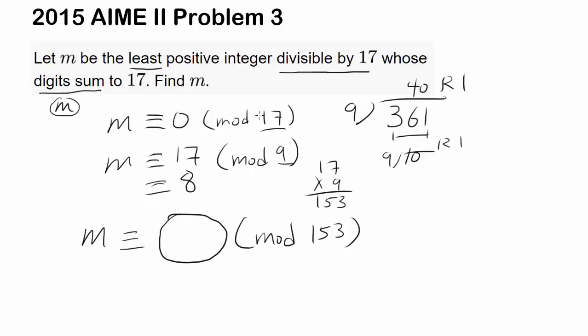So what does m have to be congruent to in mod 153? Well you know m has to be a multiple of 17 because it is divisible by 17. So m can be congruent to either 17 or 17 times 2 is 34, 17 times 3 is 51, and so on. Which one is it? Well we want the one whose mod 9 gets us 8. So when you add up the digits, you want to get 8. So 1 plus 7 gets you 8, which is good, 3 plus 4 gets you 7, 5 plus 1 gets you 6, and it's going to be 5, 4, 3, 2, 1, and it's going to rotate.